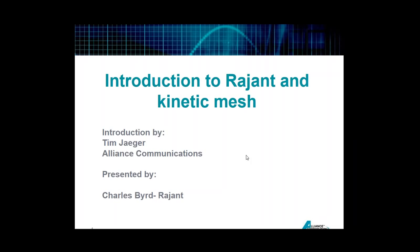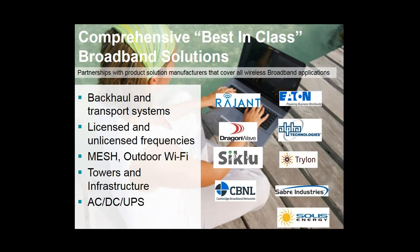Hold on one second, I'm having some technical difficulties. Alliance is a broadband distribution house. We handle manufacturers that do the backhaul and the transportation, both licensed and unlicensed. Ragin is our mesh partner, and we also handle all of the infrastructure that goes along with broadband builds and the power as well.